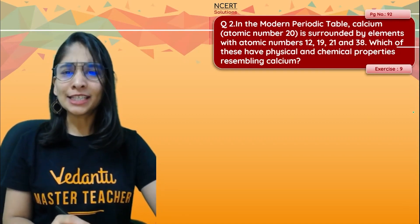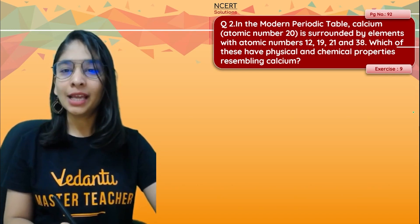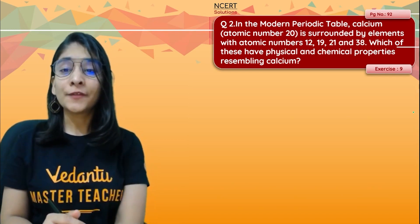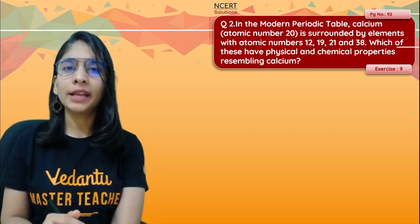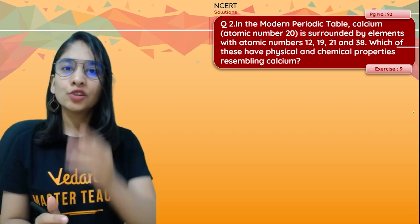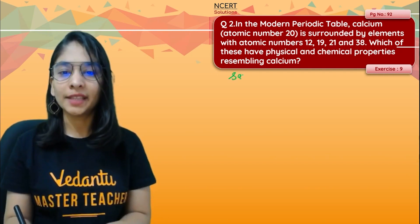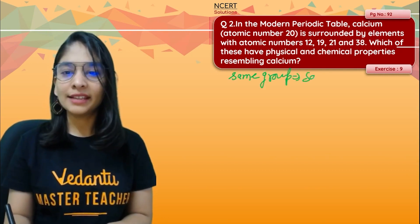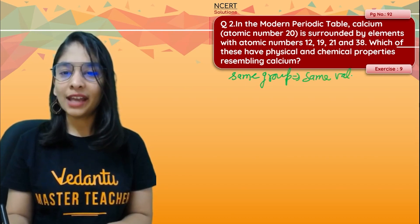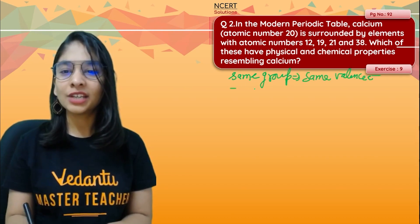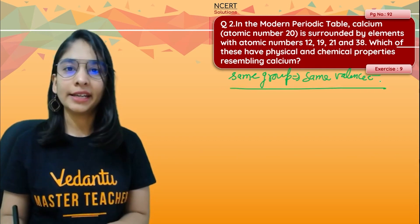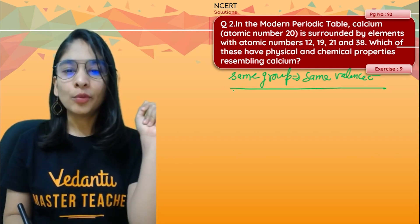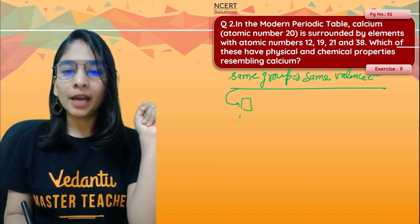In the modern periodic table, calcium is surrounded by certain elements. Which of these have physical and chemical properties resembling calcium? Elements with the same properties as calcium will be those that belong to the same group. Same group means same valence electrons, and same valence electrons means same electron in the last shell, which gives the same type of physical and chemical properties.